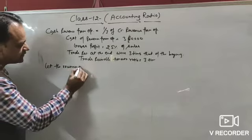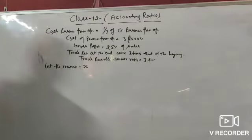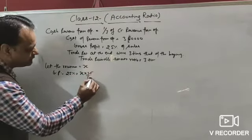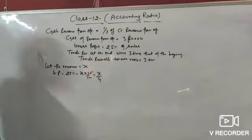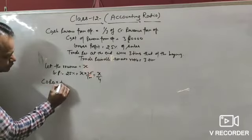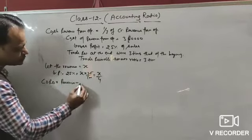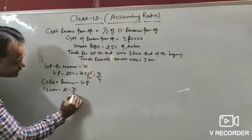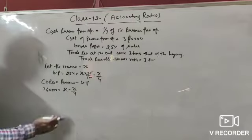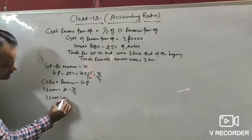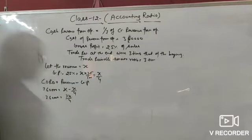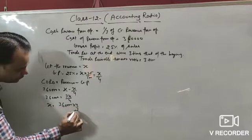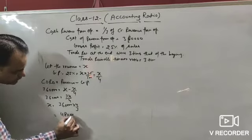Let revenue from operation = x. Gross profit = 25% of x = x/4. Cost of revenue from operation = revenue from operation minus GP = x − x/4 = 3x/4. Given cost = ₹3,60,000, so 3x/4 = 3,60,000, therefore x = 3,60,000 × 4/3 = ₹4,80,000. Revenue from operation is ₹4,80,000.